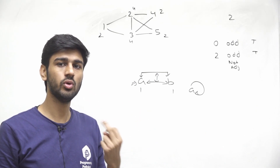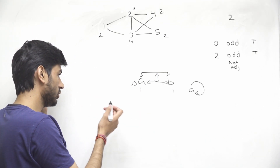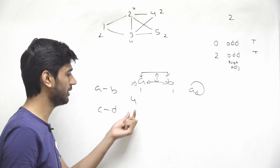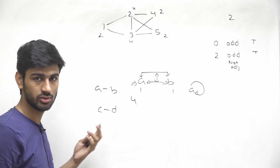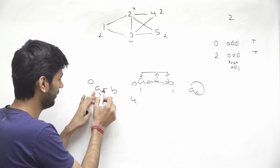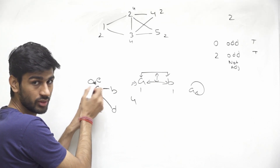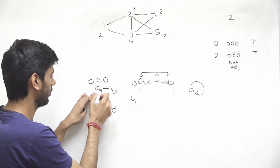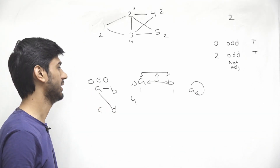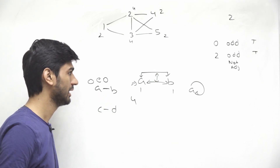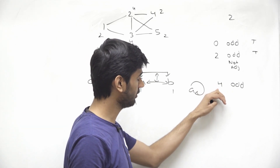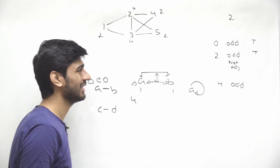If we use 2 edges, we can change the degree of 4 nodes — connecting 2 nodes with one edge and 2 other nodes with the second edge. Connecting 3 nodes using 2 edges is not ideal because adding a second edge to the same node would flip its parity back to odd. So it's better to connect 4 distinct nodes using 2 edges. If we have 4 nodes with odd degree, we can try to use these 2 edges to fix them, and we want 2 pairs of non-adjacent nodes.